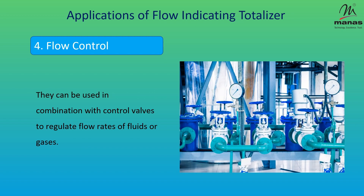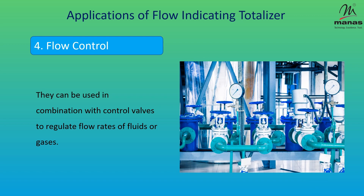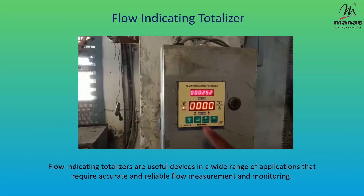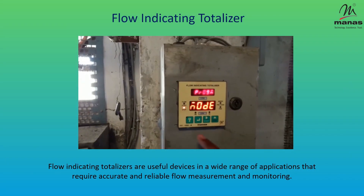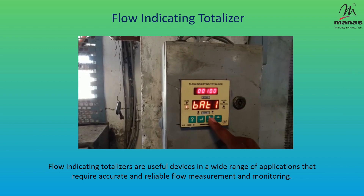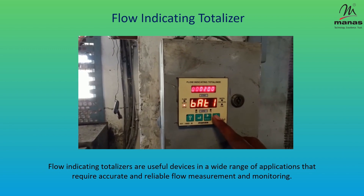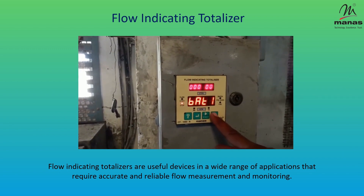Flow control — they can be used in combination with control valves to regulate flow rates of fluids or gases. Flow indicating totalizers are useful devices in a wide range of applications that require accurate and reliable flow measurement and monitoring.